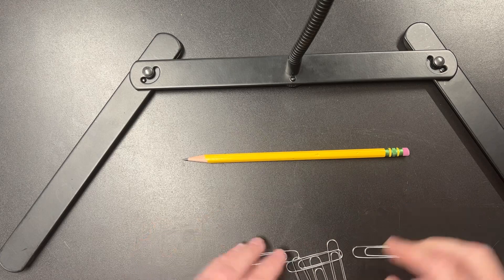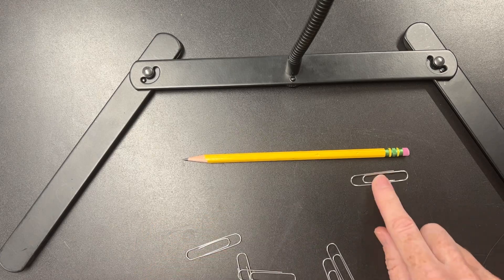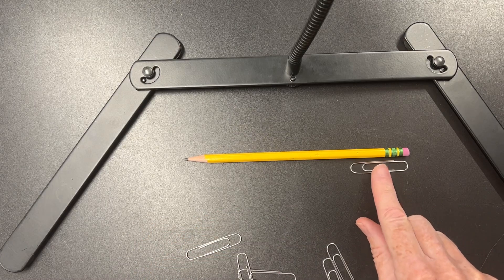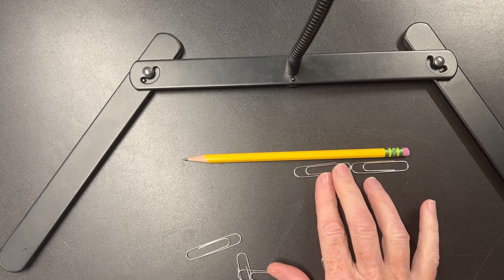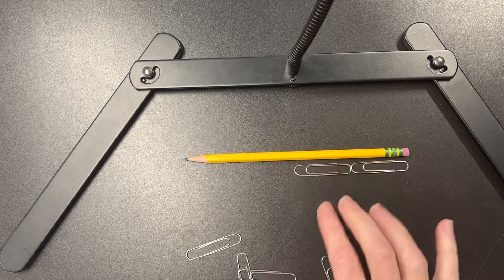I'm going to take my paper clips and spread them out. I'll start by lining it up at the very end of the pencil, and then the next paper clip is going to touch the last paper clip just barely, and I'm going to make it straight.